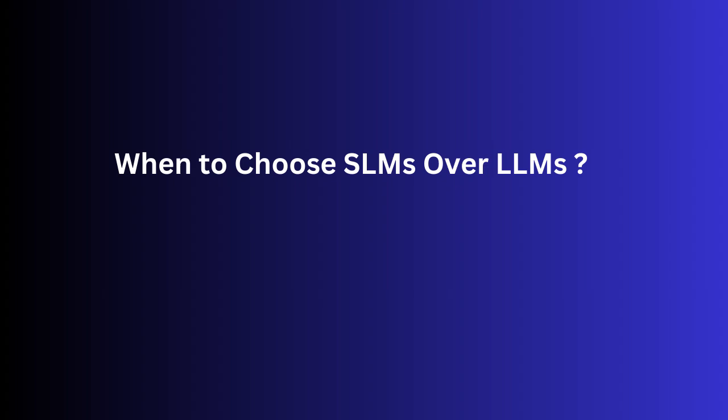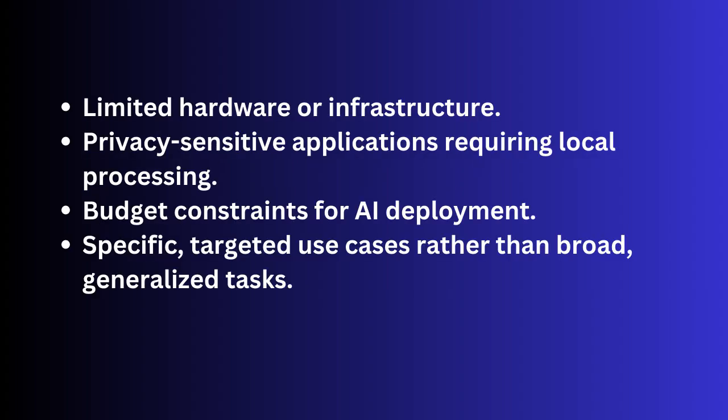So when should you choose SLMs over LLMs? First, if you have limited hardware or infrastructure, choose SLM. Second, if you are building privacy-sensitive applications that require local processing, choose SLM. Third, if you have budget constraints — organizations or individuals facing financial limitations when implementing AI solutions can benefit from SLMs. Fourth, for specific targeted use cases rather than broad generalized tasks. By leveraging SLMs, organizations and individuals can enjoy the benefits of AI without the heavy computational and financial burden of large models.